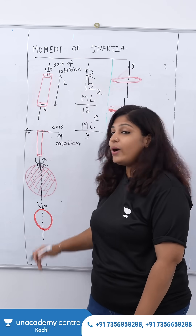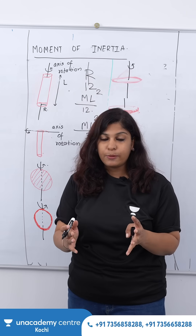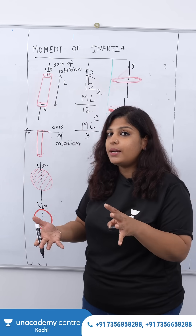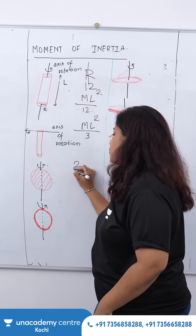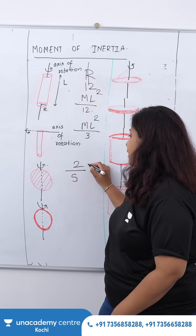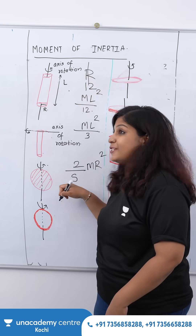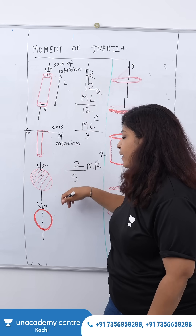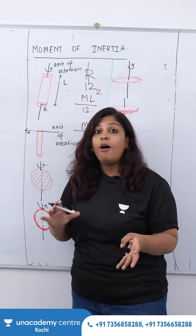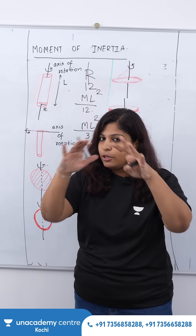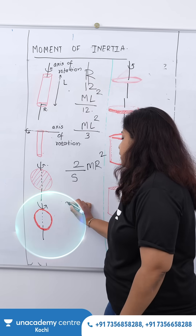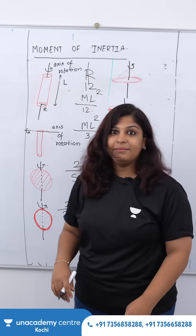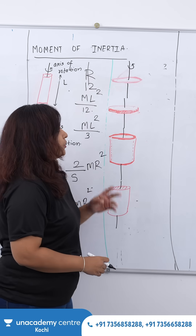Then you have a solid sphere rotating about its axis of rotation. You can write it as 2/5 mr² — solid, 5, you get the connection. So if this is 2/5, what about a hollow sphere? A hollow sphere means there is nothing inside, just a shell, so this is going to be 2/3 mr².